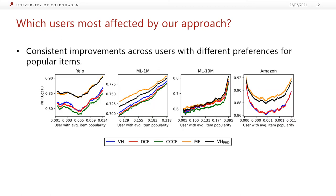We can also group users based on the popularity of their items, focusing on the average item popularity per user. We want to see if there are differences in improvements for users that prefer very popular content compared to less popular content. What we see is that improvements are relatively consistent across datasets independent of item popularity. On ML1M and ML10M, we see slightly larger differences for the least popular content, but generally it's consistent. This shows our approach learns embeddings that work well for both popular and less popular items.